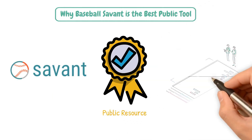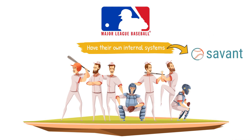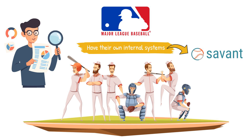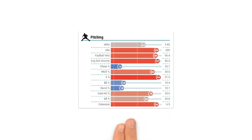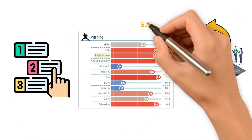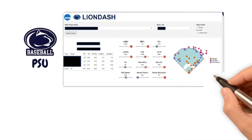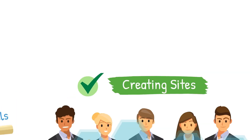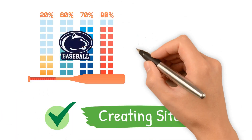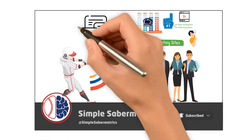Baseball Savant is the best public resource for advanced stats, but here's something you may not know — MLB teams have their own internal systems modeled exactly after tools just like this one, with internal dashboards showing off whatever an organization deems important. If one organization values a pitcher's velocity above all else, they have a team of analysts building out systems that highlight that for each player. While it is less common at the college level, here at Penn State we've built out custom tools similar to Baseball Savant to analyze player performance at deeper levels, helping us stay ahead of the curve when it comes to player development and portal acquisitions. If you're interested, let us know in the comments and we could potentially show off some of those features in a future video.